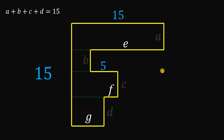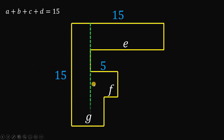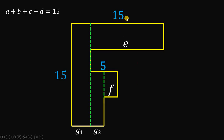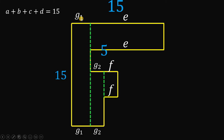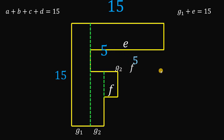Now for the other variables: if we draw a vertical line, G gets cut into two parts — G sub 1 and G sub 2. Drawing a perpendicular line, and focusing on the side equivalent to 15, since it is a rectangle, the opposite side must be G sub 1, and the other side must be E. Then focusing on the side equal to 5, since it is also a rectangle, this is equivalent to G sub 2, and this side is F.